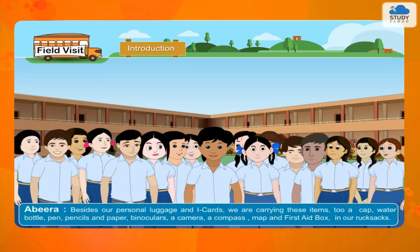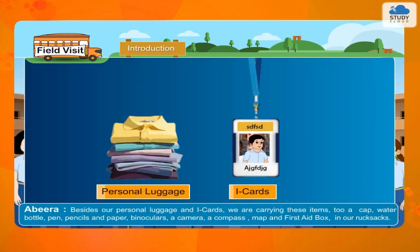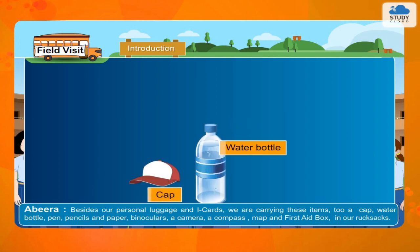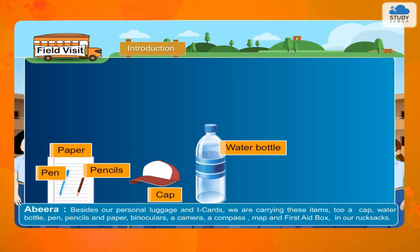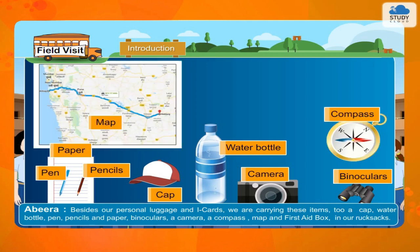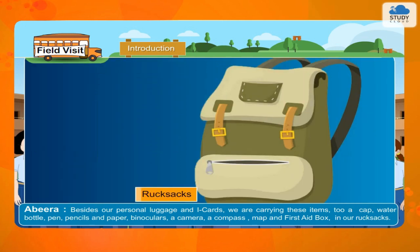Abhira: Besides our personal luggage and ID cards, we are carrying these items too: a cap, water bottle, pen, pencils, and paper, binoculars, a camera, a compass, a map, and a first aid box in our rucksacks.